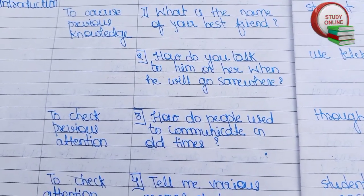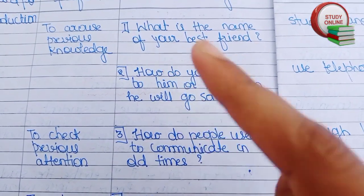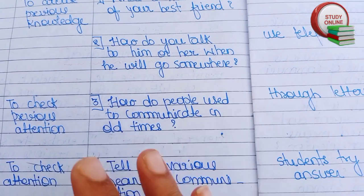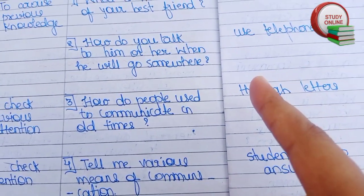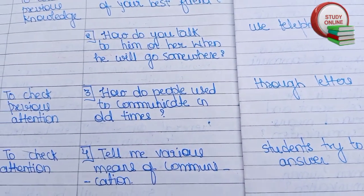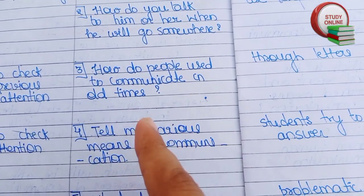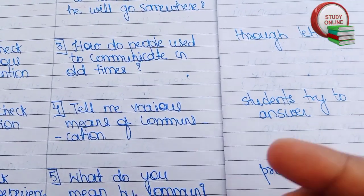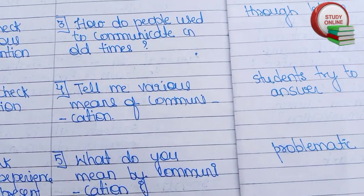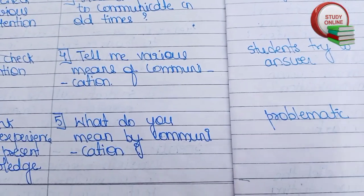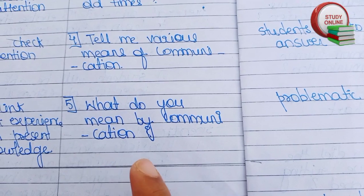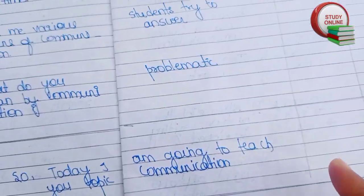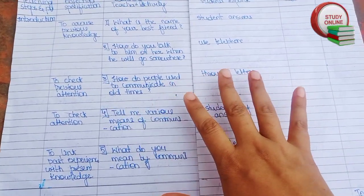For the introduction, we can ask students: What is the name of your best friend? How do you talk to him or her when he goes somewhere? They will answer: we use telephone to talk to them. How did people used to communicate in older times? They will answer: through letters. Then ask: tell me various means of communication. First students will try to answer what communication means.